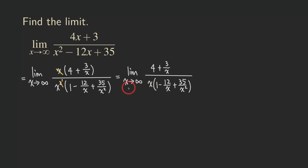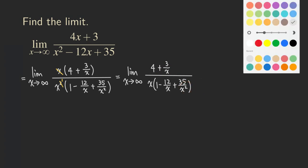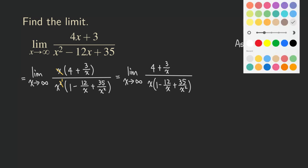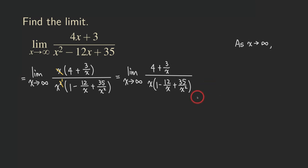So now what? As x approaches infinity, we are going to consider each term separately. The 4 stays as 4. Then we have 3/x — as x gets large, 3 over a large number means that fraction is approaching 0.